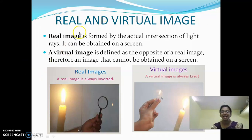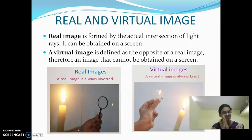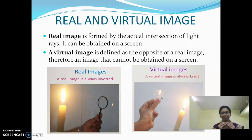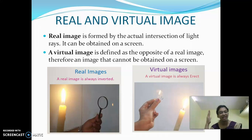Real image is formed by the actual intersection of light rays. So what do you mean by intersection? Two or more rays come and combine — intersection of points. Real image is formed by the intersection of light. When light rays combine together, we are able to get a real image. We are able to see it on the screen.